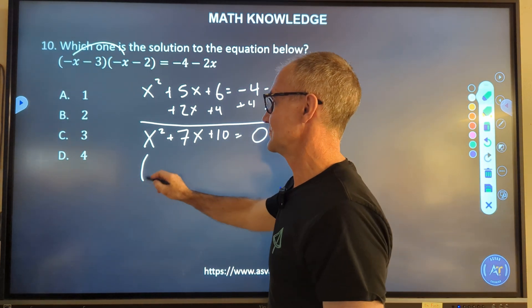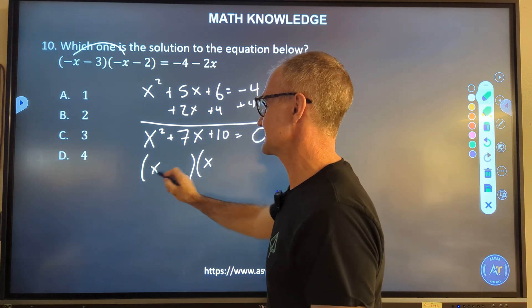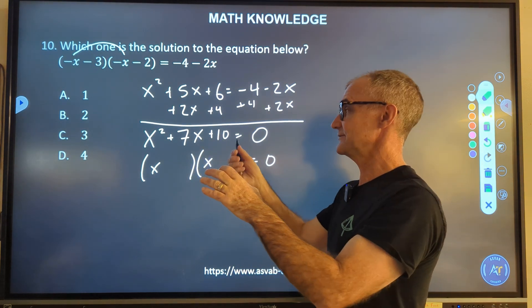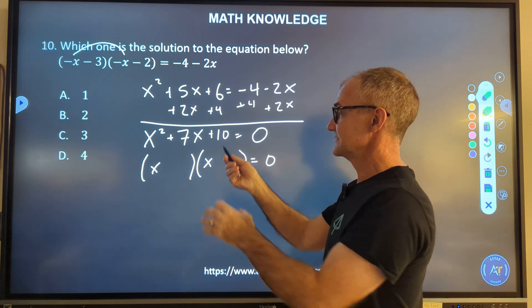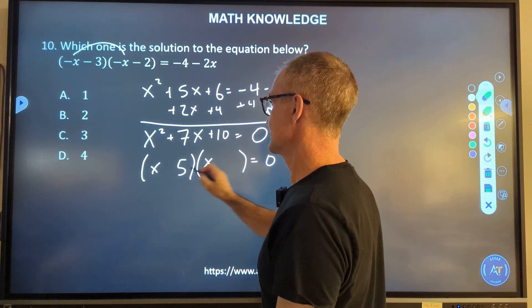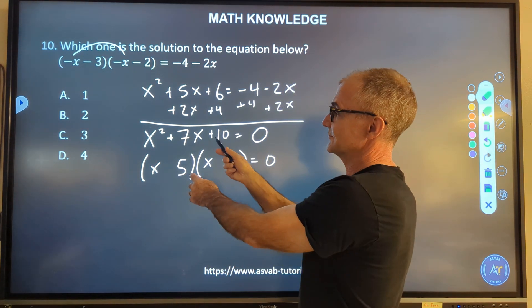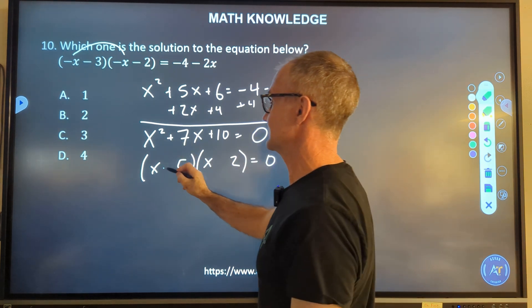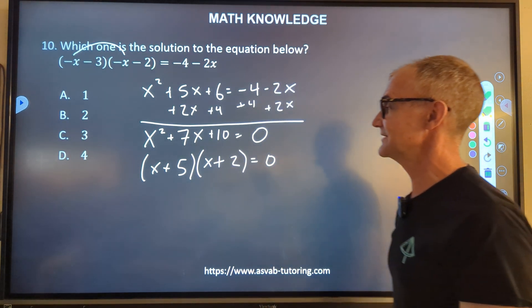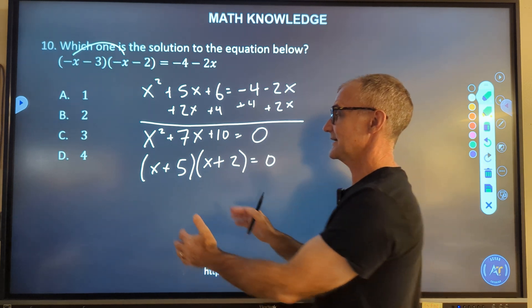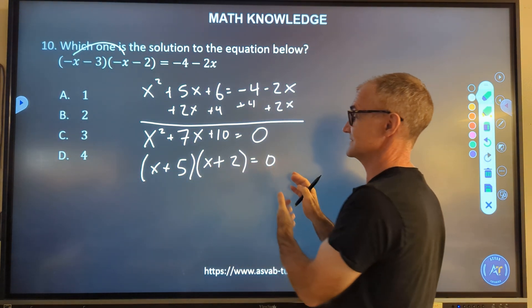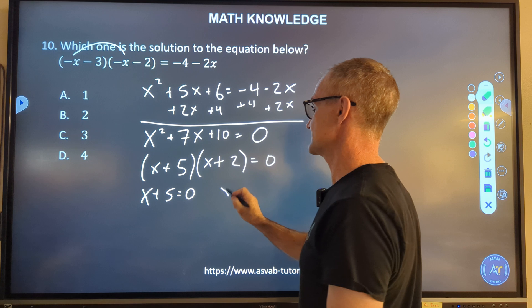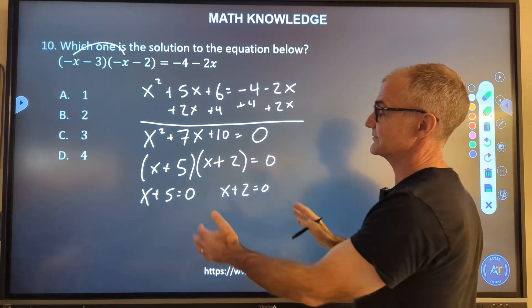Here I have x squared plus 5x and 2x is 7x. 6 and 4 is 10. So I got my quadratic set equal to zero. Now I have to factor it. Only factors of x squared are x and x. Factors of 10 that are going to give me a 7. I'm looking for numbers multiplied together to give me a 10, added together to give me a 7. I have a 5 and a 2. That'll work. Either they're both negative or both positive to give me a 10. If they were both negative, that would be negative 7x. So they have to both be positive.